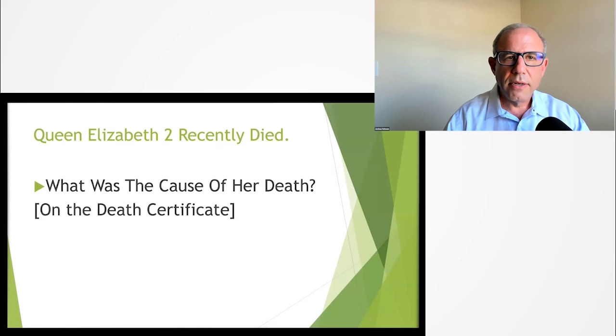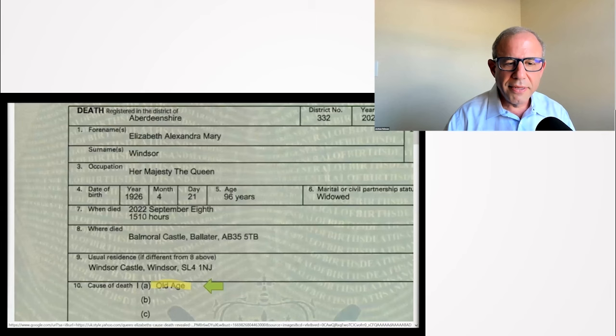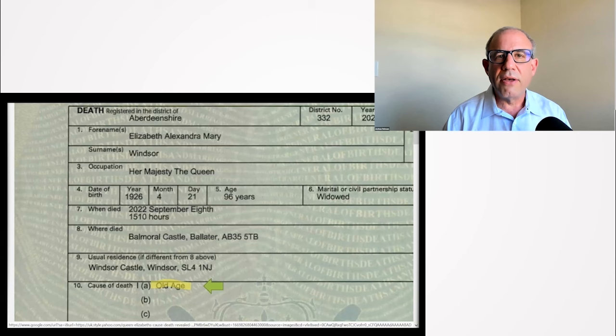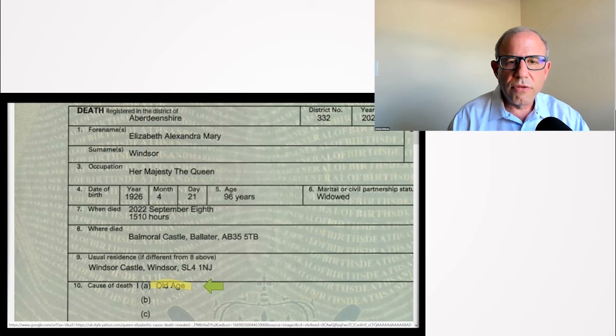Queen Elizabeth II recently died. Does anyone know what the cause of her death was on her death certificate? So heart attack, no it wasn't a heart attack. Someone said natural causes, no not natural causes. We're going to zoom in here on her death certificate. It was old age. To me that's the same thing, and I think that's the reality. If we live long enough, whether that's 96 years like the queen did or whether it's 110 or 130 or 150 - and yes I think that given the new science we have on longevity, 150 is not out of the picture.